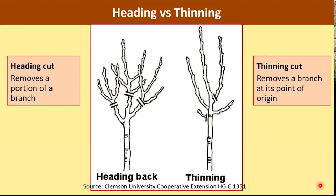Given the role of auxin, what happens when we prune? In making a heading cut, we remove a portion of a branch but keep some portion. By removing that portion we remove auxin at the tip of those branches. Therefore, the remaining branch is free to grow and all the latent buds are free to develop. The result is a bushier plant.